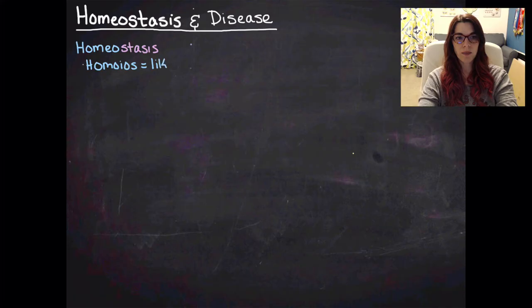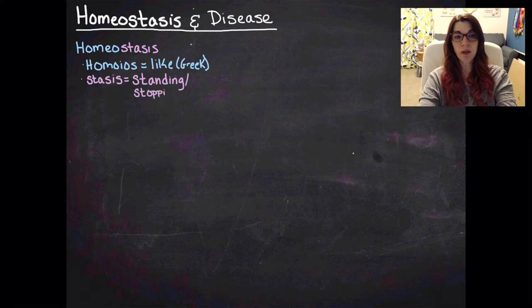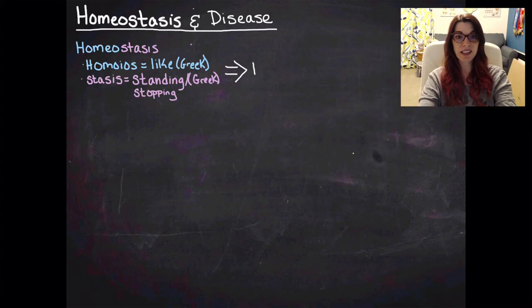Homeo is from the Greek word homeos, which means like, and stasis is from the Greek word for standing or stopping, which kind of means stable in this case. And so homeostasis means stable like.